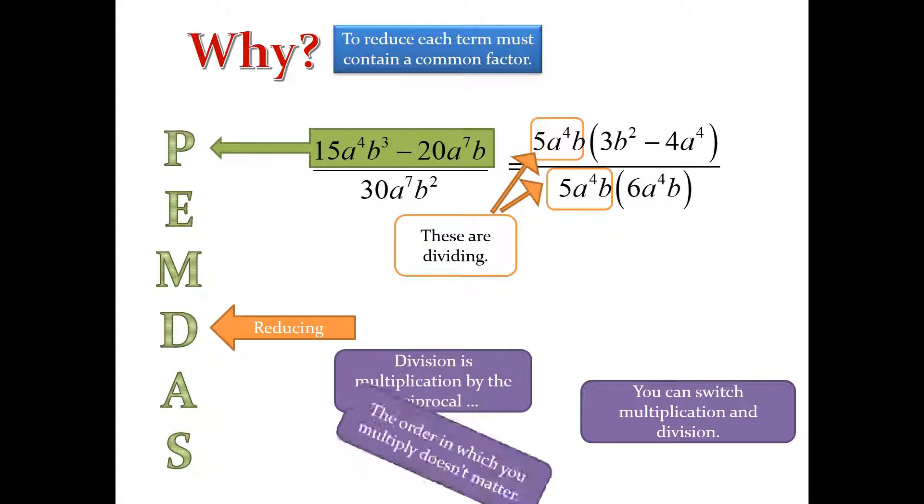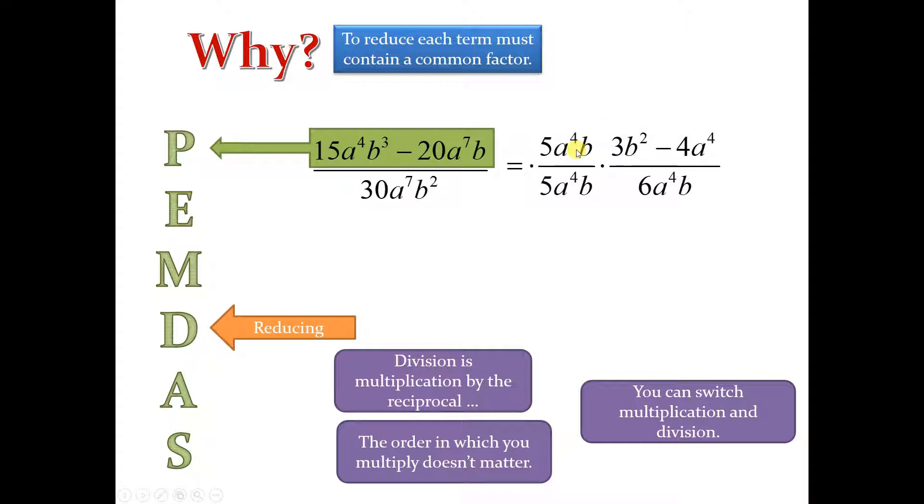So, we can actually divide these two things together, and that something divided by itself is just one, and it's gone. That's why we can reduce before we take care of the operation in the parentheses. But that's also why you have to have a common factor between all terms.